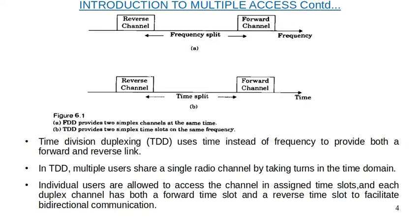Time division duplexing uses time instead of frequency to provide both a forward and reverse link. In TDD, multiple users share a single radio channel by taking turns in the time domain. Individual users are allowed to access the channel in assigned time slots, and each duplex channel has both a forward time slot and a reverse time slot to facilitate bidirectional communication.